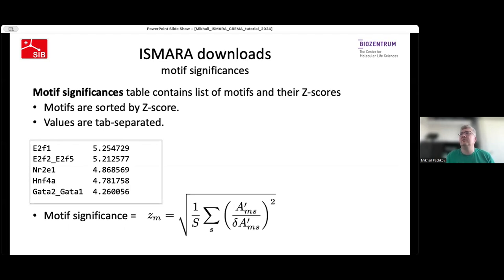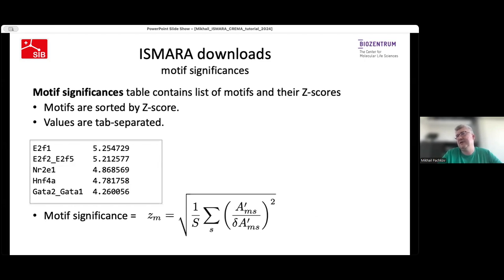The significance table contains information about motif significances — essentially the same table you see on the main results page. It has only two columns: motif names and significances. This table is pre-sorted so the most significant motifs appear on top. Motif significance is essentially the average of squared Z-values, then square root.